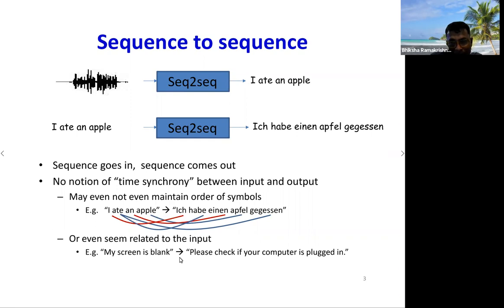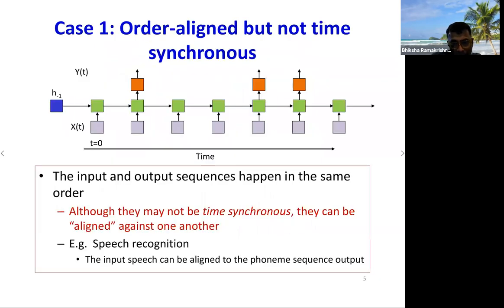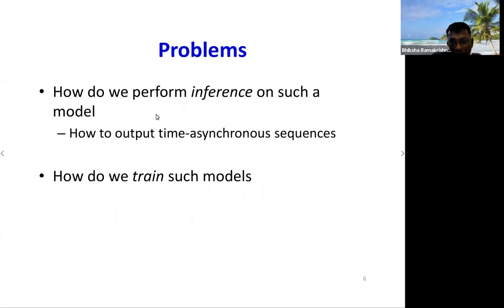In dialogue systems, the input may be 'my screen has gone blank' and the system outputs 'please check if your computer is plugged in' — input and output are not even directly related. All of these are instances of sequence-to-sequence conversion using recurrent neural networks. We've been talking about the case where input and output are order-aligned but not time-synchronous. Let's recap: output symbols are emitted intermittently at specific instances, which means we can align the output sequence against specific input times.